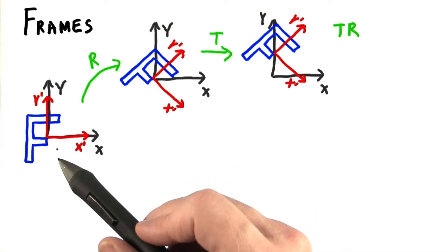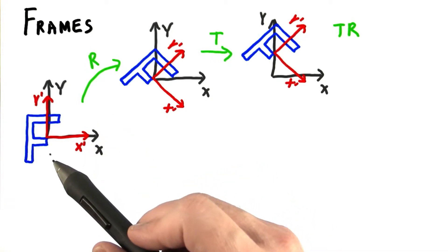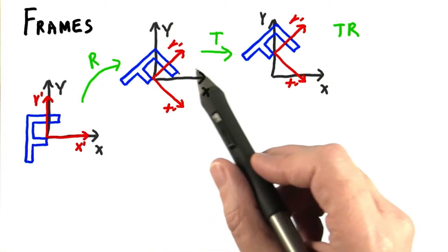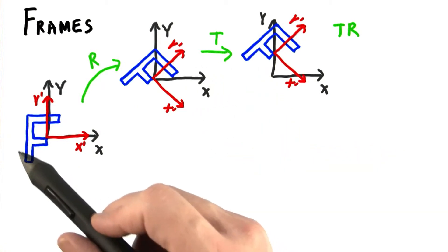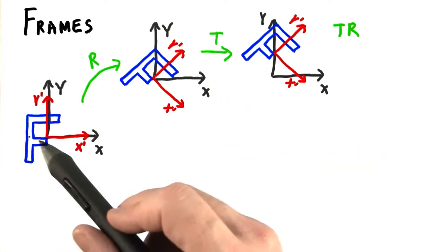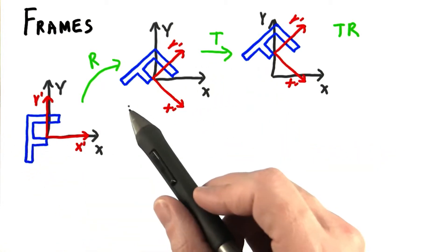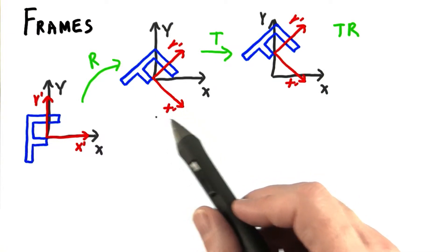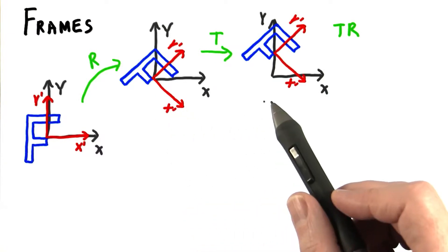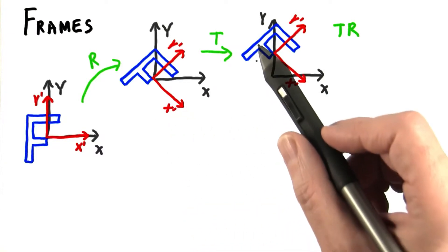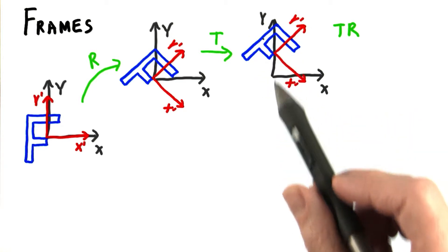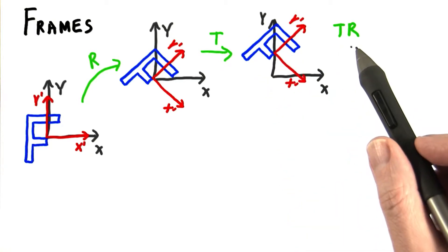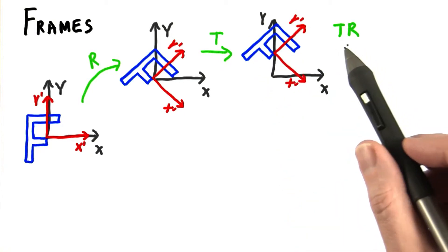In previous lessons, we've seen that the order of transforms for an object is usually rotate and then translate. For example, we start with the letter F at the origin. If we rotate it negative 45 degrees, we get a tilted F. We then translate it by one unit vertically and it moves up. This we write out as TR, with the matrices applied in reverse order.